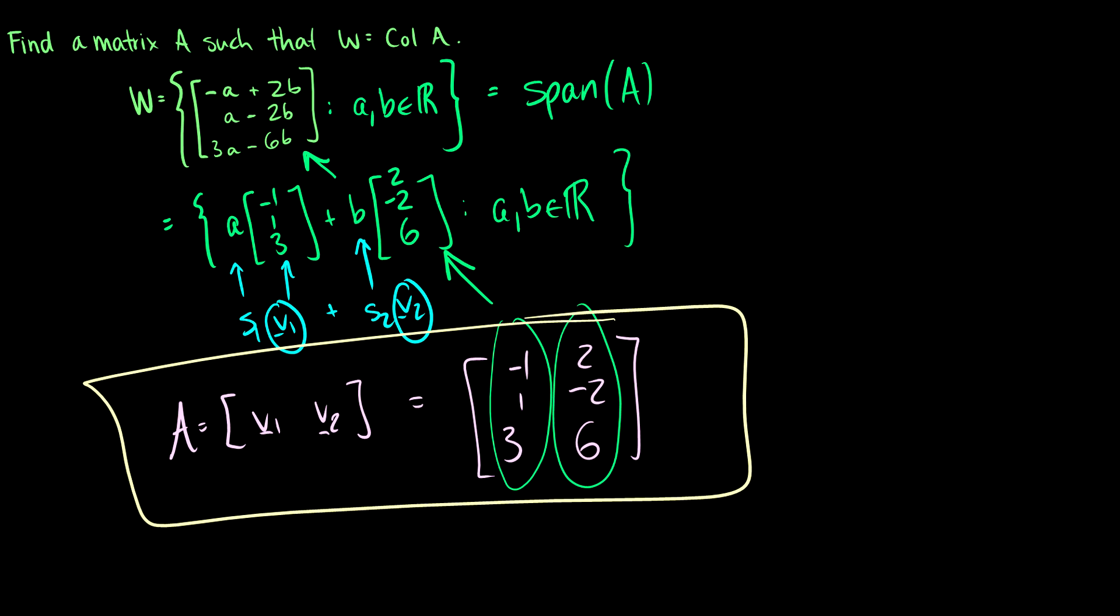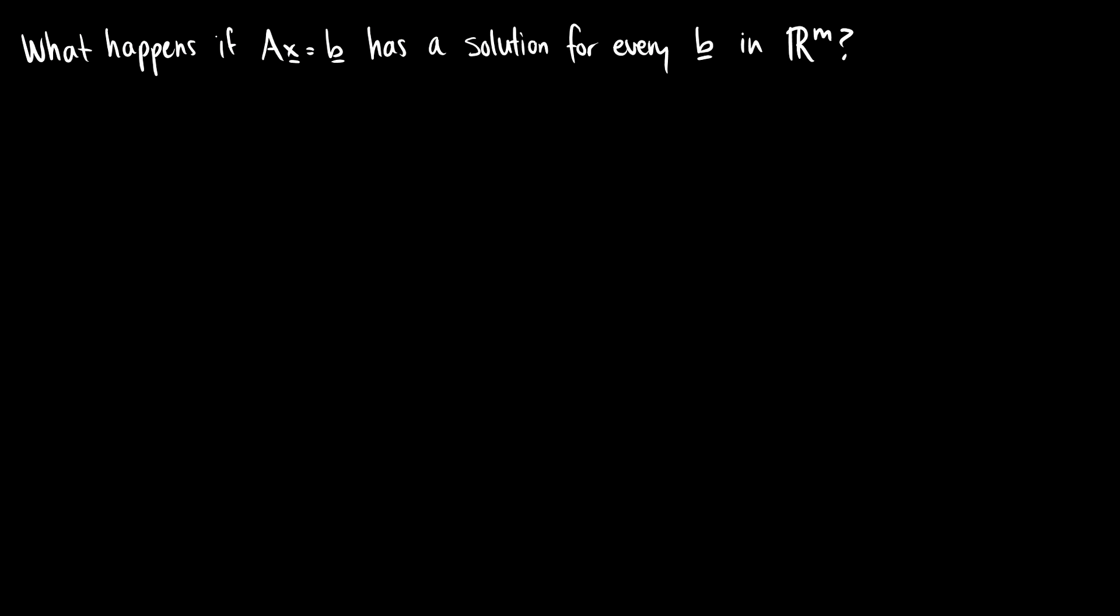And don't worry, we'll do another practice question after the next slide. Okay. So what happens if Ax equals b has a solution for every b in R^m?